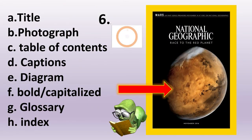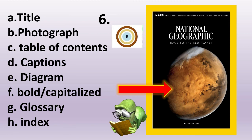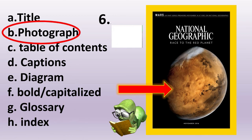For number 6, what is the correct feature of informational text that the arrow wants to point out? The answer is letter B — Photograph.